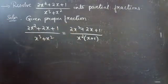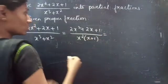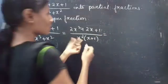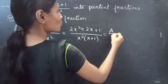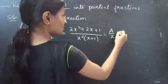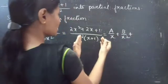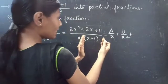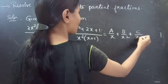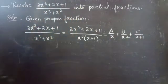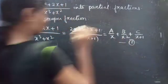This equals: for x squared in the denominator you will have two fractions, a by x plus b by x squared. And since x plus 1 is linear, you can write c by x plus 1. Consider this as equation 1.